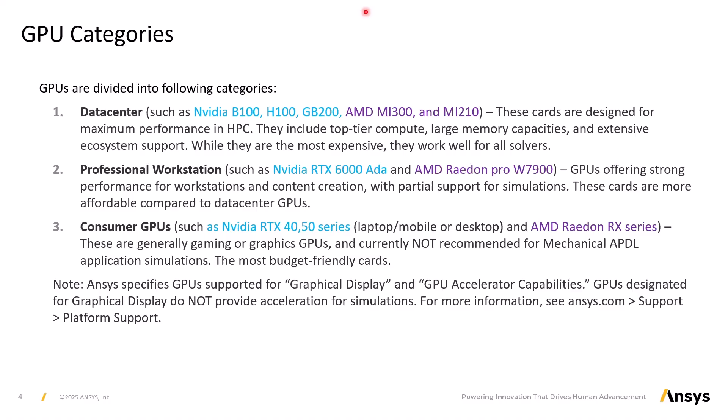GPUs can be broadly divided into the following categories. First are data center cards — these are AI or HPC cards like the Nvidia B100, H100, or the AMD MI300, MI200, and others. They are designed for maximum performance in HPC, offering high compute power, large memory capacities, and extensive ecosystem support. While they are the most expensive cards on the list, they will work well with all solvers in the Mechanical APDL application.